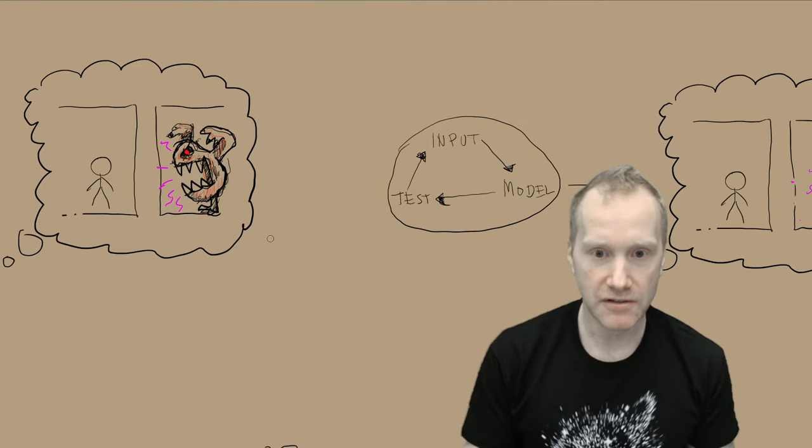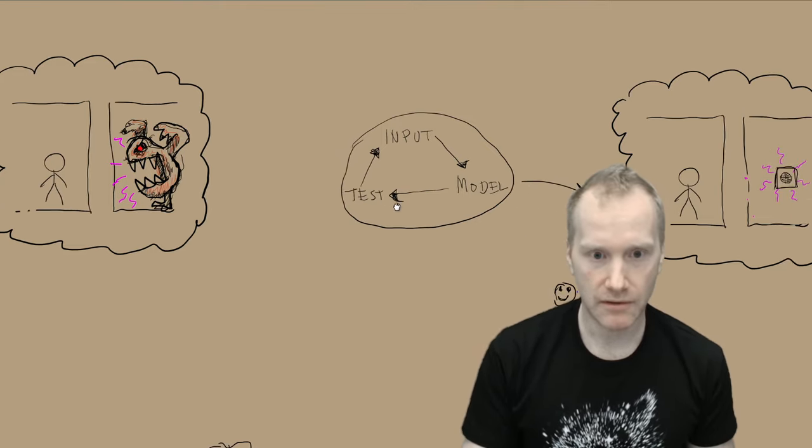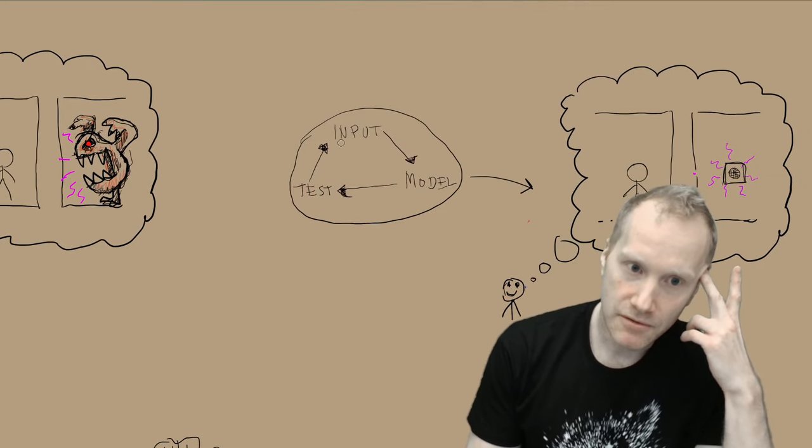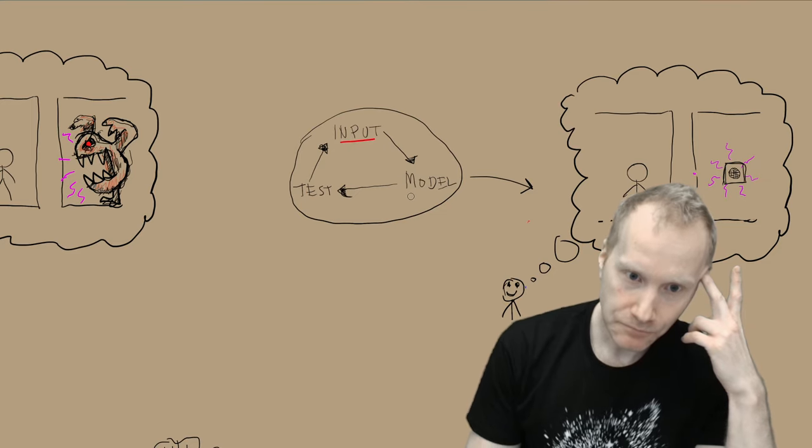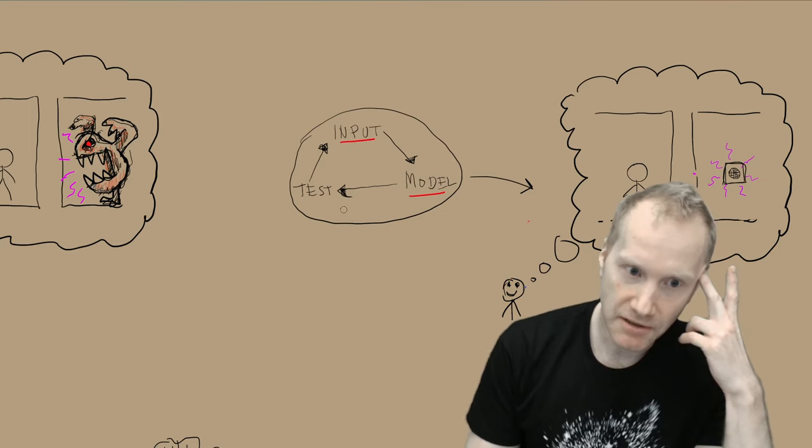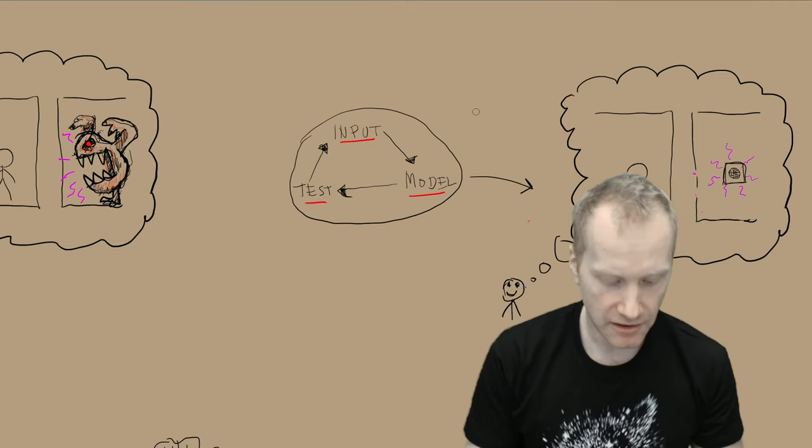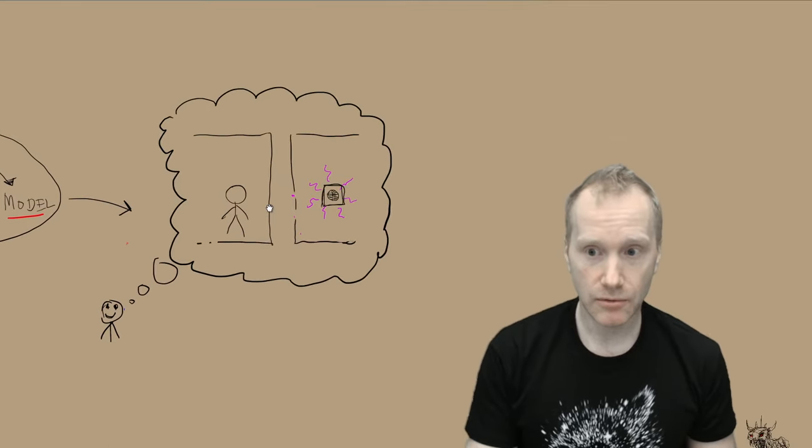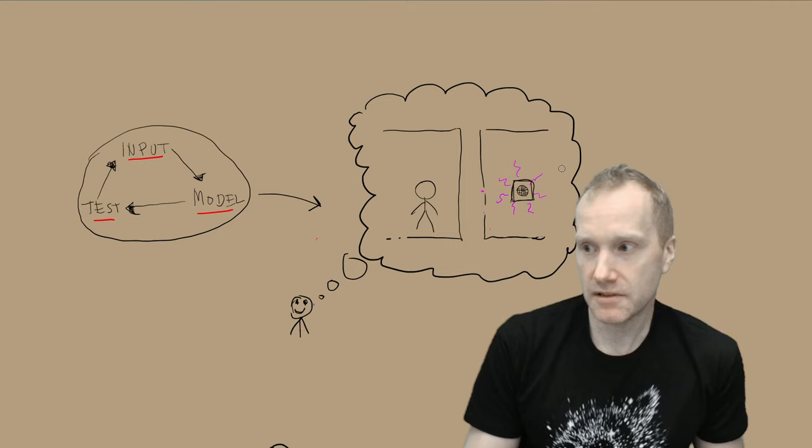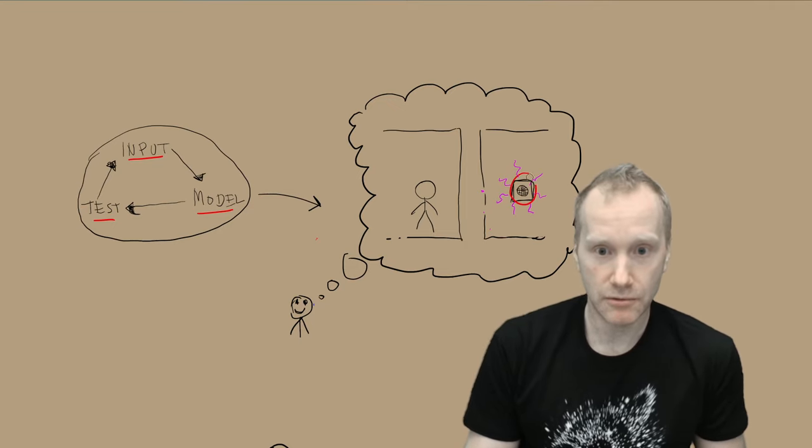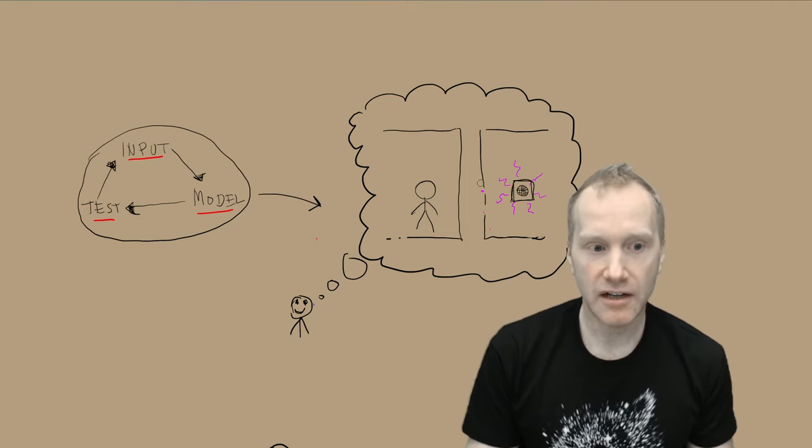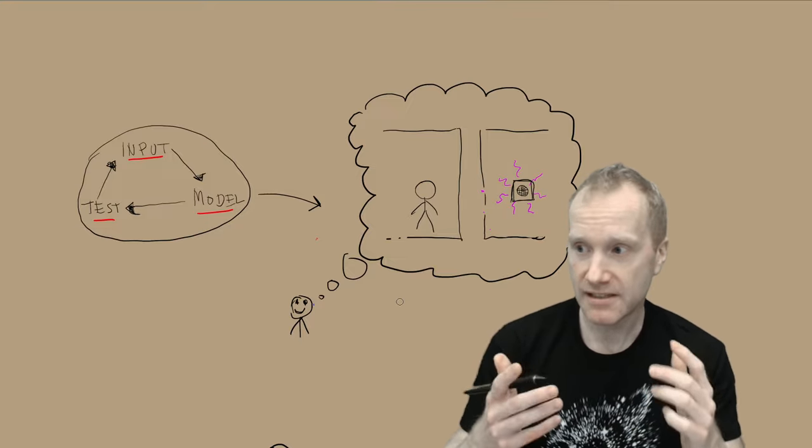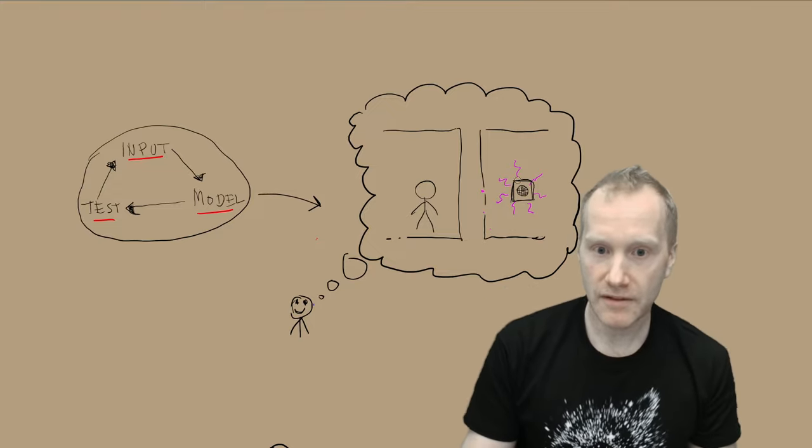And then the player is going to test this. They might go into the room and check if something is actually there. How do things change when that happens? You're going to get more input, you use that to update your model, and then you're going to test the model.